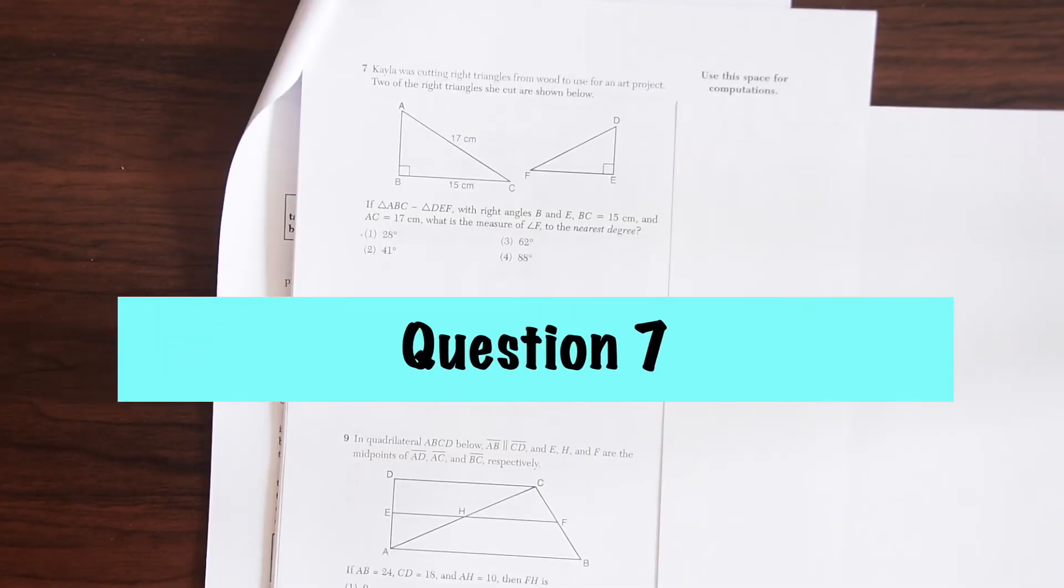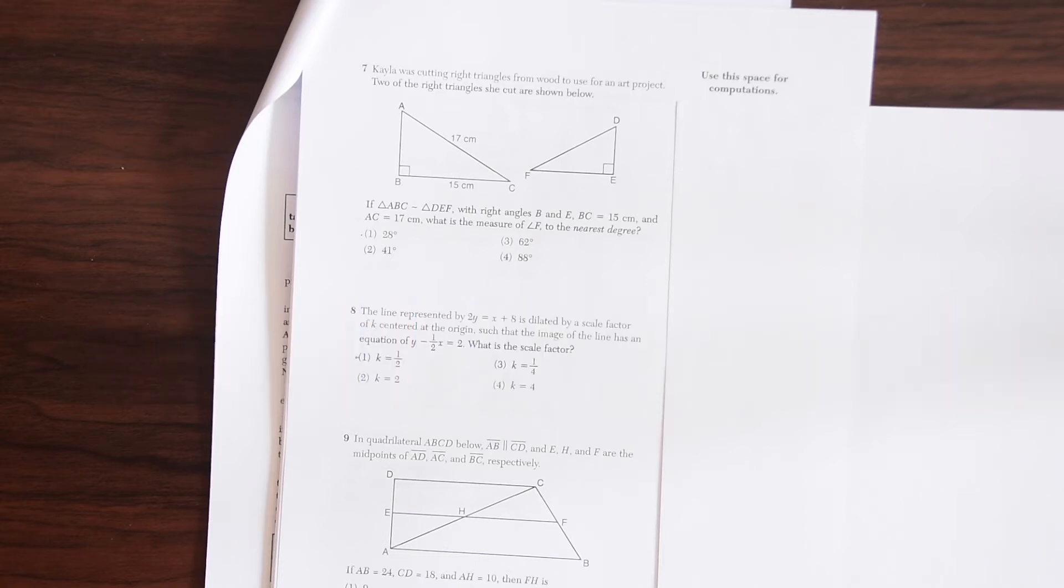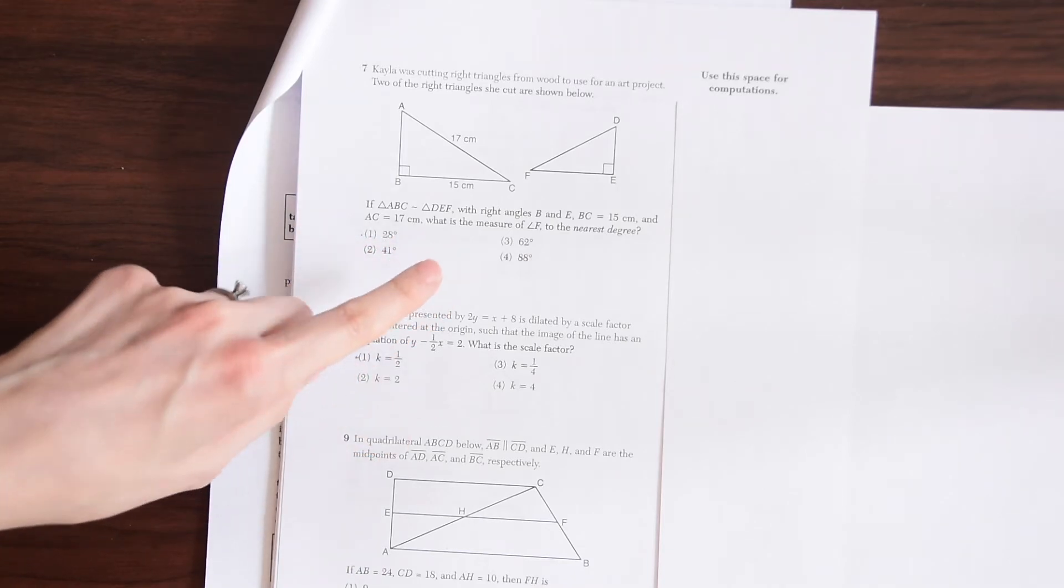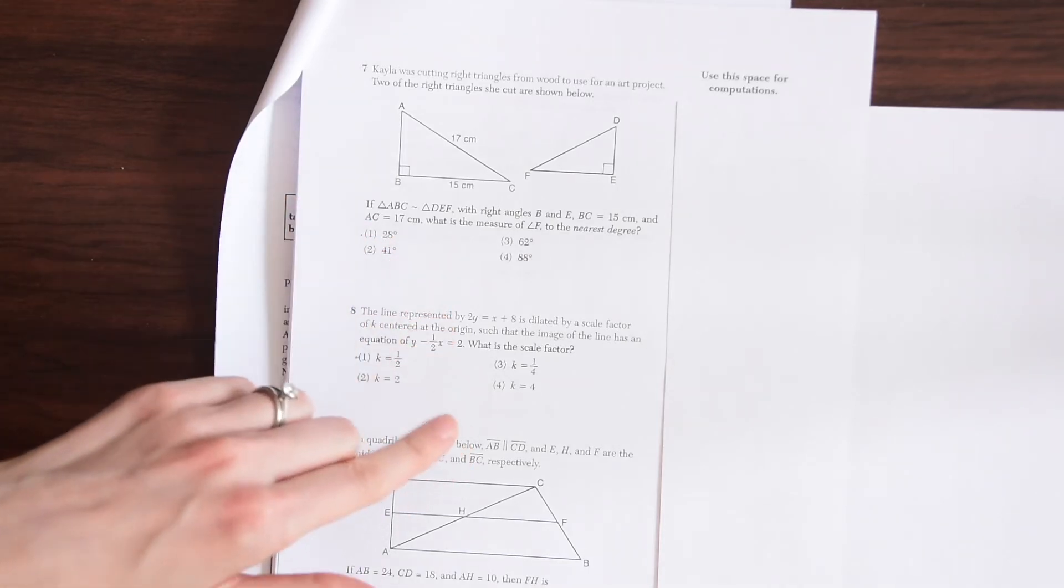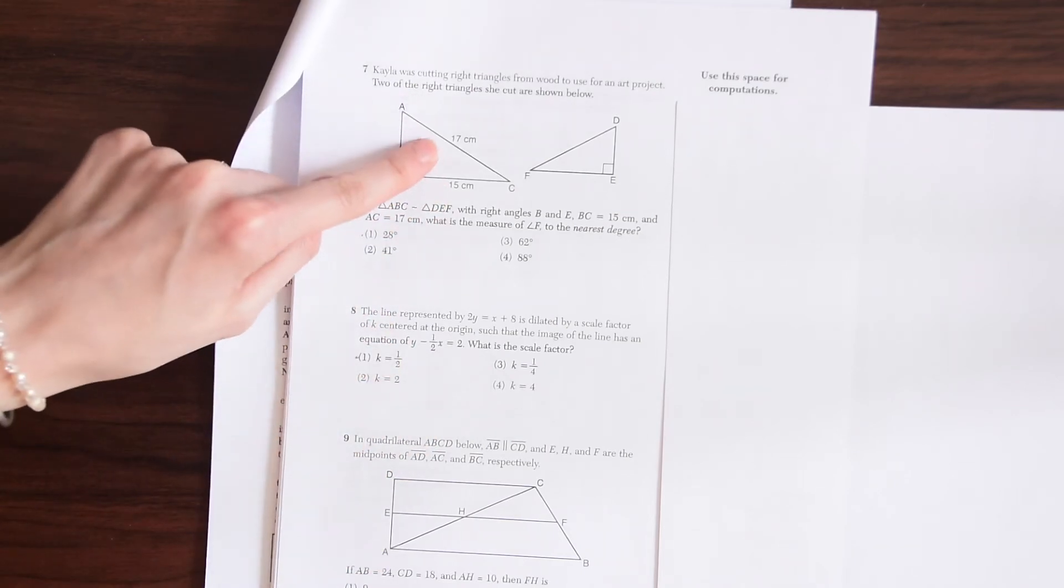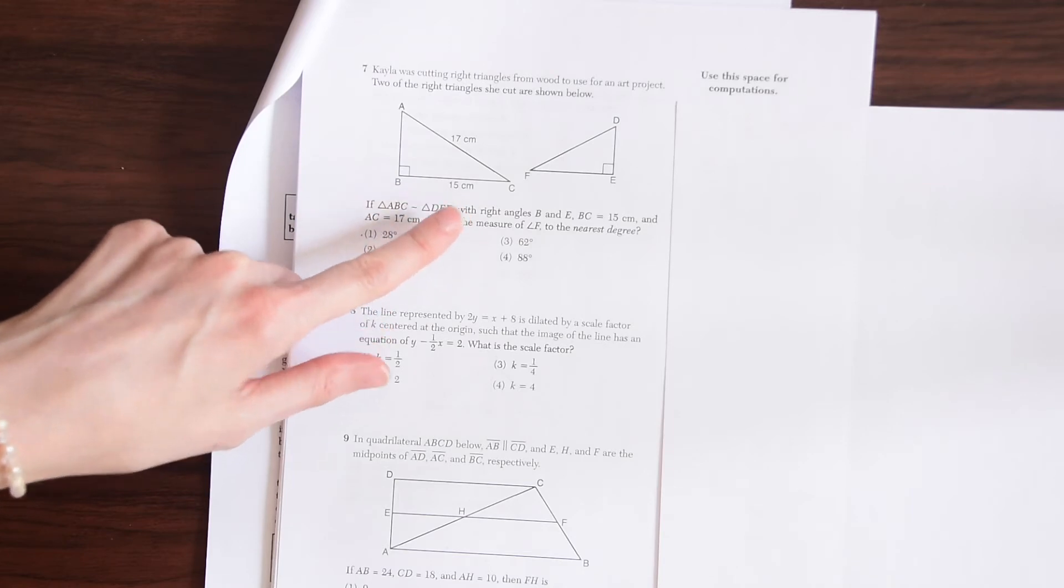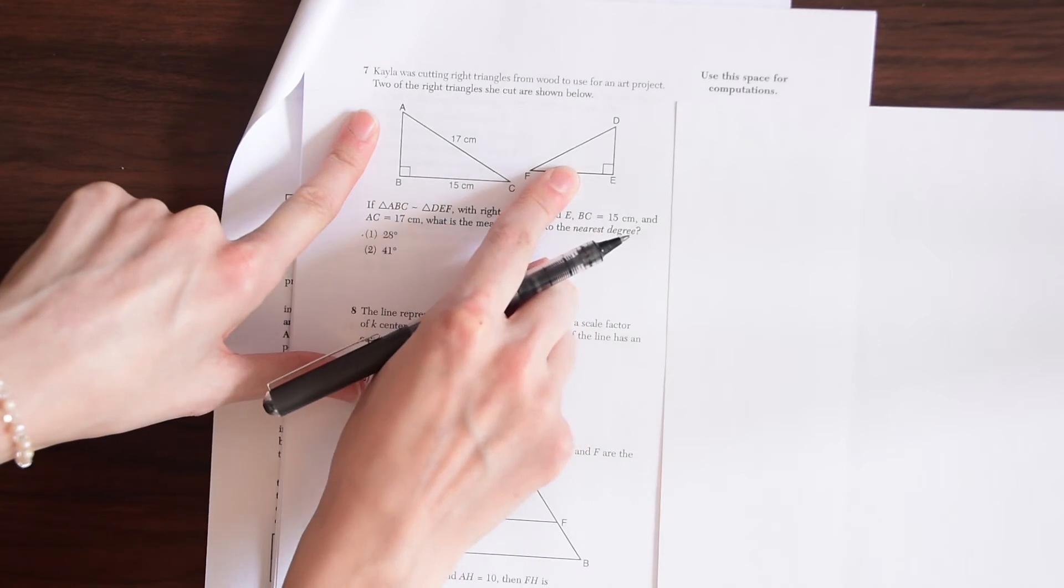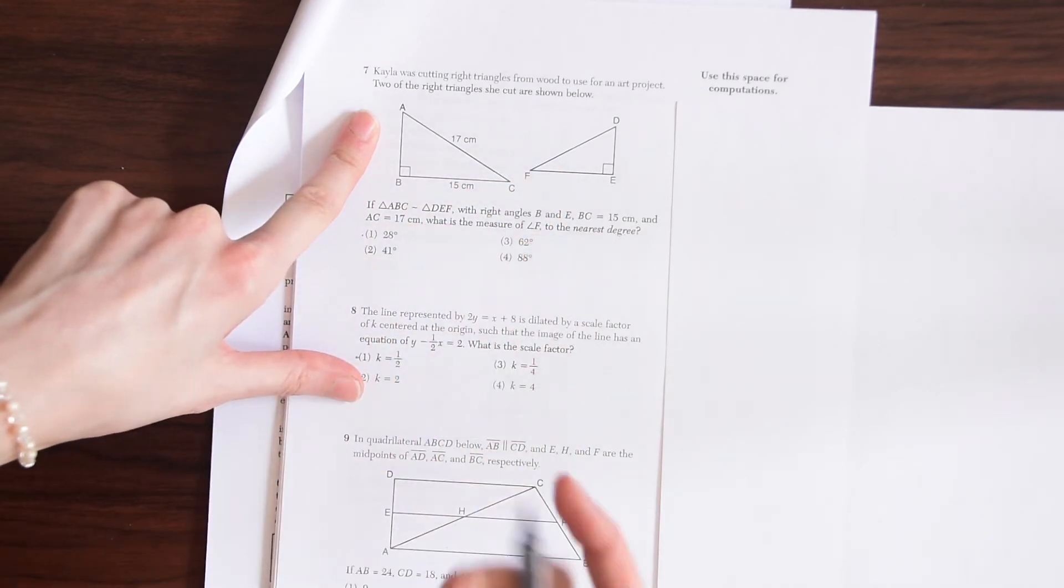On to question seven. Caleb was cutting right triangles from wood to use for an art project. Two of the right triangles she cut are shown below. If triangle ABC is similar to triangle DEF with the right angles B and E, BC equals 15, and AC is 17, what is the measure of angle F to the nearest degree? So we were given, we know that these two are similar, which means they're going to have equal angles.